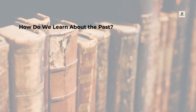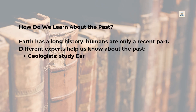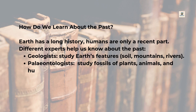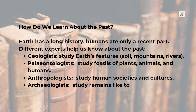How do we learn about the past? Earth has a long history, and humans are only a recent part. Different experts help us know about the past. Geologists study Earth's features — soil, mountains, rivers. Paleontologists study fossils of plants, animals, and humans. Anthropologists study human societies and cultures. Archaeologists study remains like tools, pots, beads, bones, and houses.